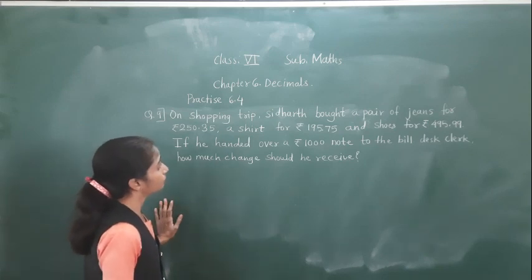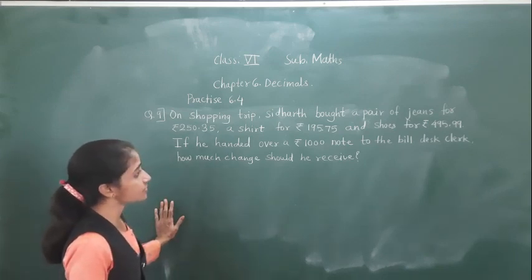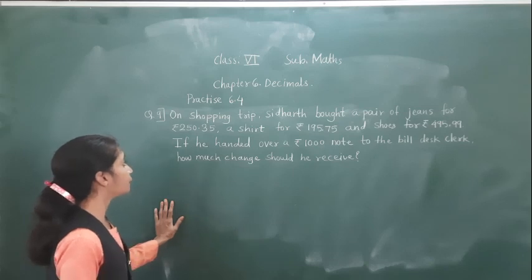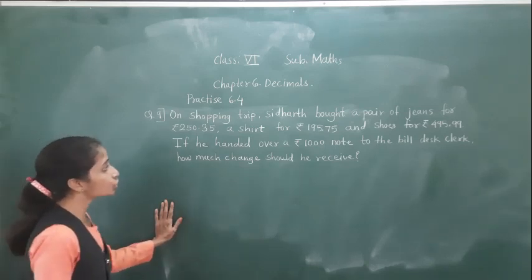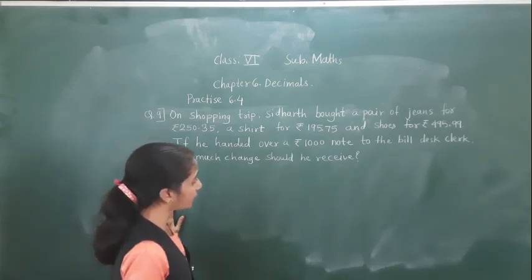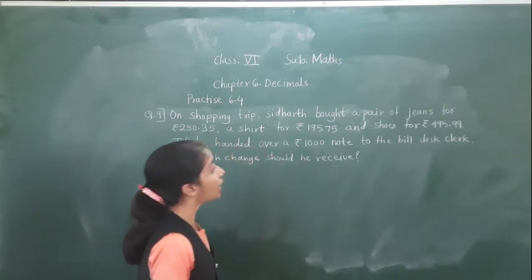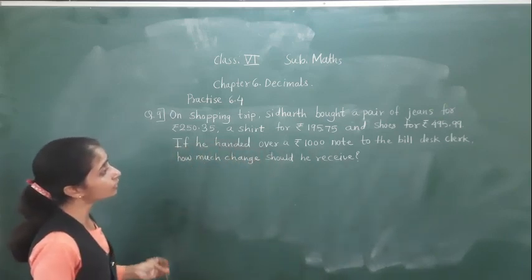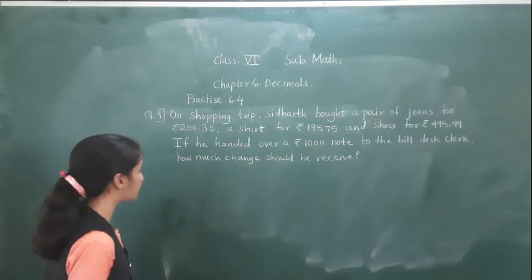On a shopping trip, Siddharth bought a pair of jeans for rupees 250 and 35 paise, a shirt for rupees 195 and 75 paise, and shoes for rupees 495 and 99 paise.